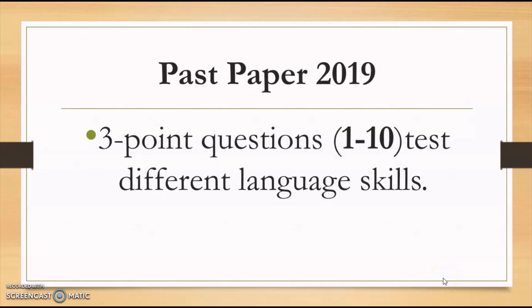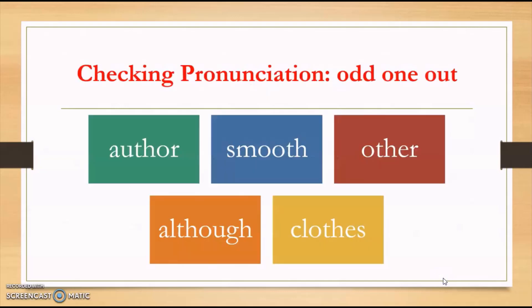Questions 1 to 10 will carry three points and these questions will test different language skills. For example, one of the questions will check your pronunciation. There are five words on my screen and you have to pick the odd one out in terms of pronunciation. You are looking at the letters TH, which makes a TH or THE sound.